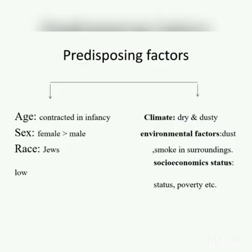The predisposing factors include gender and race, while on the other side, climate, environmental factors, and socioeconomic status also play an important role. Trachoma is more likely to occur in infancy or childhood, and more in females than males. As mentioned before, climatic and environmental factors play an important role in leading to trachoma.